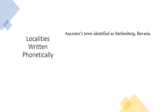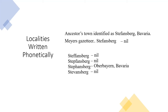In another example, family records identified an ancestor's place of birth as Stefansberg in Bavaria. A search of the Myers Gazetteer did not show a town listed by that spelling. A search was then made for phonetically similar spellings. All of them were negative, except Stefansberg in the district of Oberbayern, spelled with a P-H instead of an F. Failure to understand phonetics in the use of given names, surnames, and locality names could result in dead-ending an ancestral line by tracing a wrong line or searching in a wrong locality.